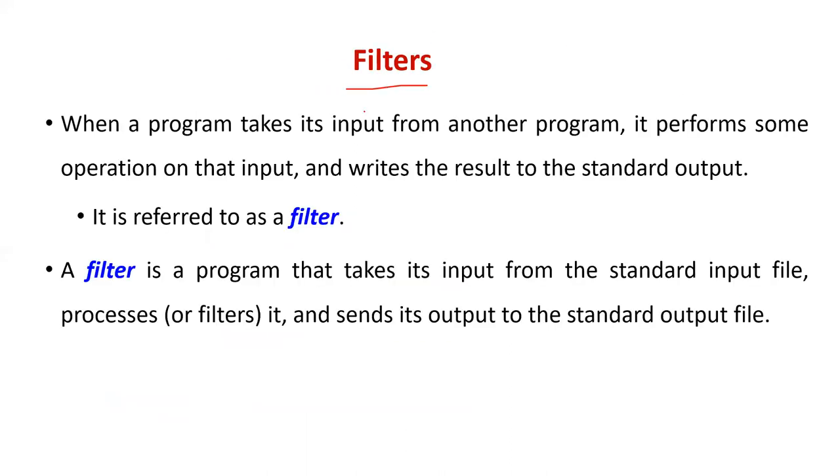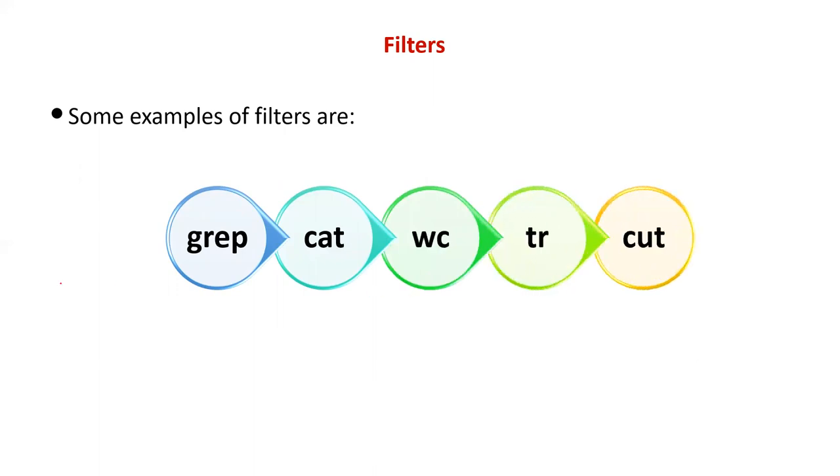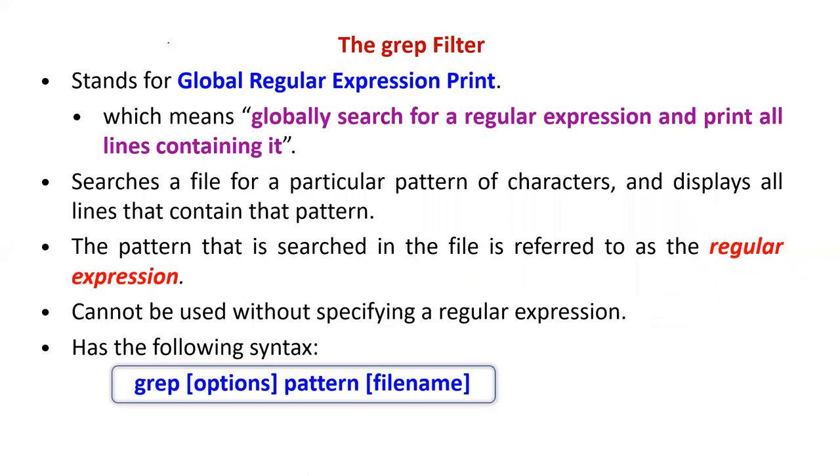The concept of filters: when a program takes its input from another program, it performs some operation on that input and writes the result to standard output. It takes input from a standard input file, processes it, and sends output to the standard output file. In the processing stage, filters are used. Examples of filters include grep, cat, wc (word count), tee, and cut. The grep filter stands for Global Regular Expression Print.